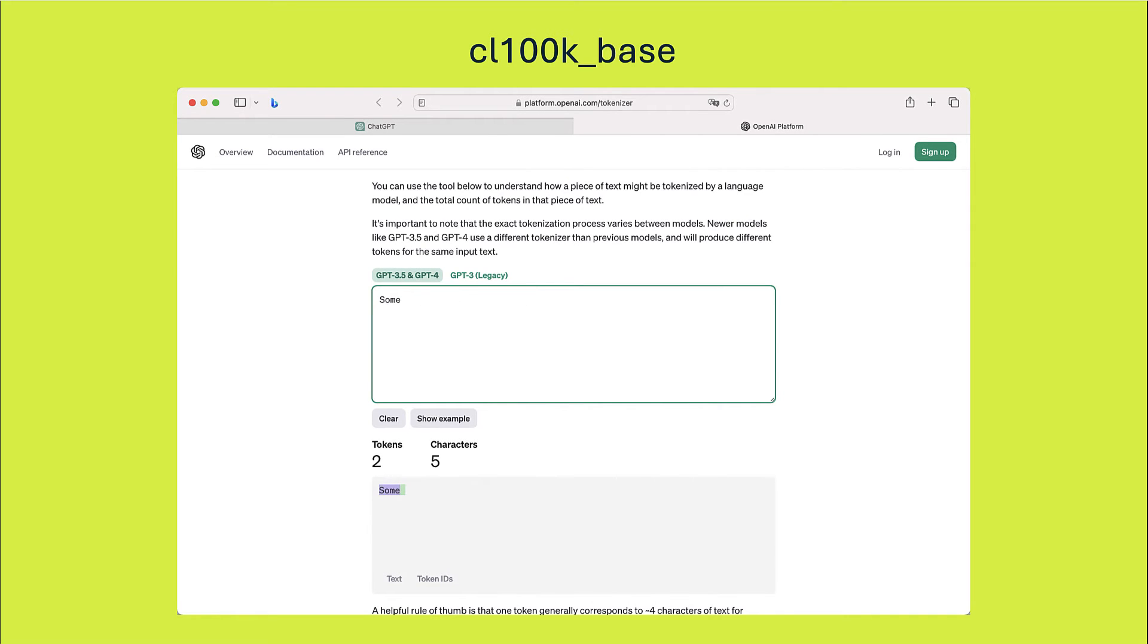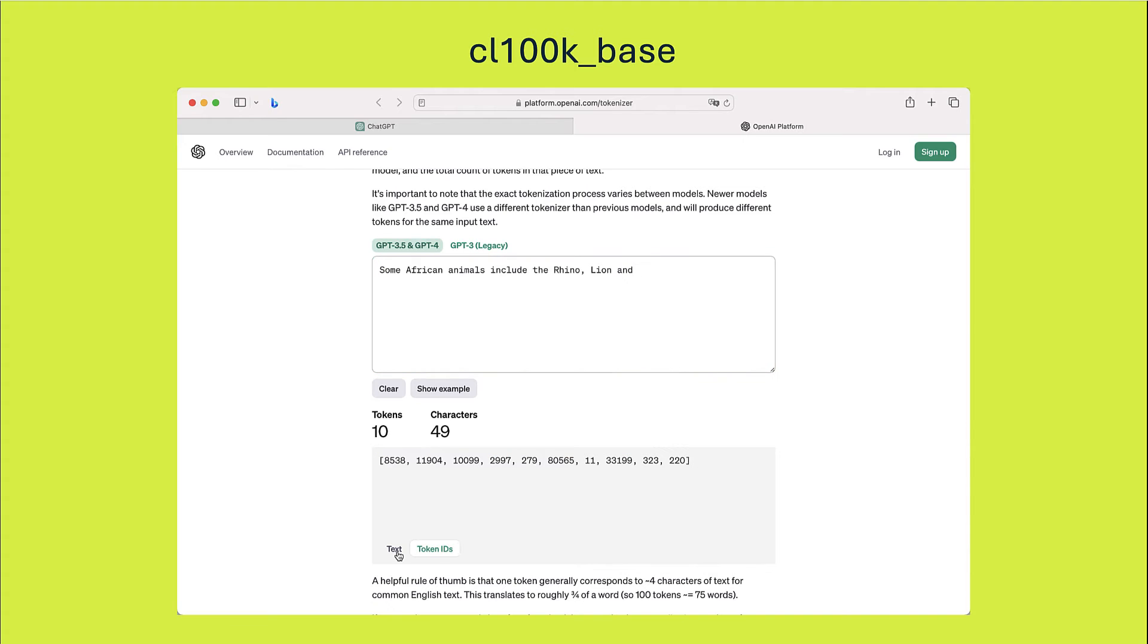So if I give it my text, in the demo in the website, you can see live what the tokens are and what the token IDs are as well. To do this programmatically, you would use a tokenizer. For Python, the most popular one is TickToken, which is made by OpenAI.